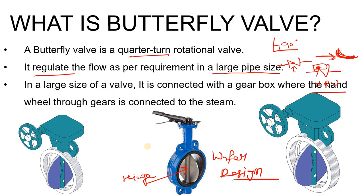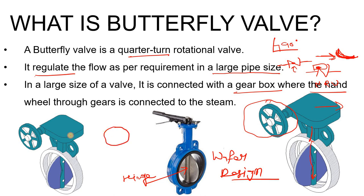In large-size valves, we use a gearbox — you can see the gearbox with a handwheel attached to operate it. The wheel is attached to the stem, which helps you operate the valve. There is also an indicator showing what percentage the valve is open. That gives you an overview of how the butterfly valve looks.